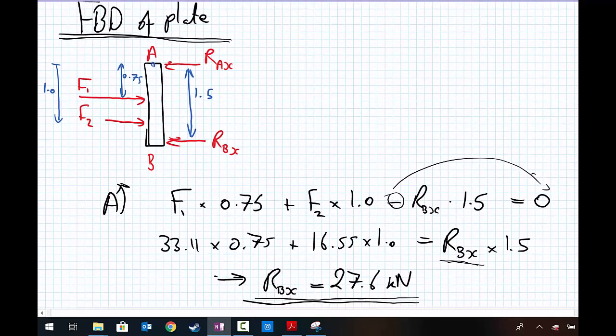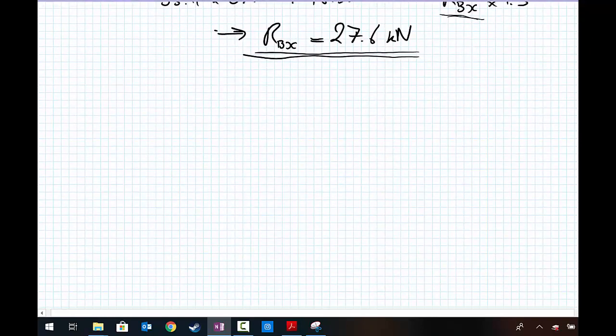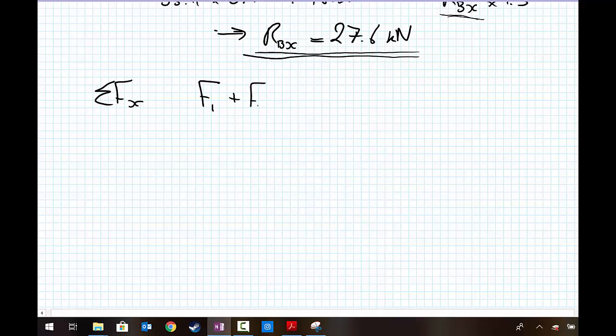So we know RBX, now I'll take the sum of the forces in the X direction to determine RAX. Sum of the forces in the X direction: pointing to the right, I have F1 plus F2 equals the terms pointing to the left, which is RAX plus RBX. I substitute the known values for F1, F2, and RBX, and I get that RAX equals 22.1 kilonewtons.